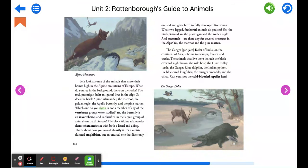Which one do you think is not a member of any of the vertebrate groups we've studied? Yes, the butterfly is an invertebrate, and is classified in the largest group of animals on Earth, insects. The black alpine salamander shares characteristics with both a lizard and a frog. Think about how you would classify it. It's a moist-skinned amphibian, but an unusual one that lives only on land and gives birth to fully developed live young.